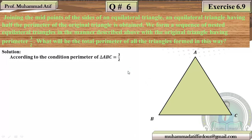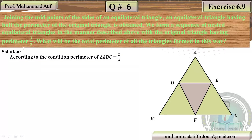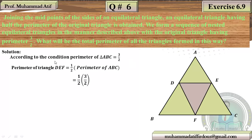An equilateral triangle has all three equal sides. The perimeter of triangle ABC is 3/2. Perimeter is the sum of all sides. By connecting the midpoints of each side, a new triangle DEF is formed. The perimeter of triangle DEF is half of ABC: (1/2) × (3/2) = 3/4. No problem.